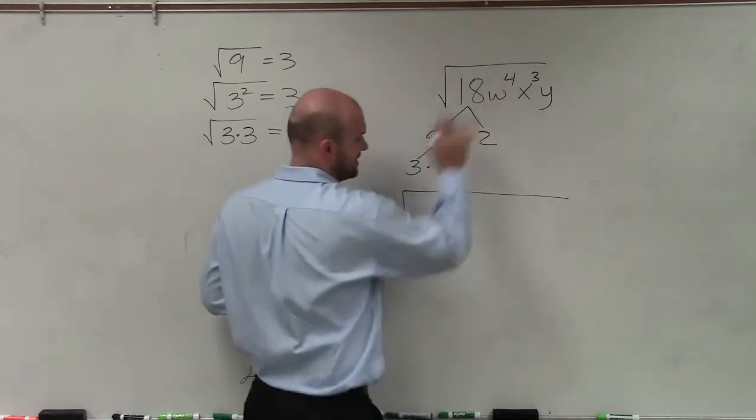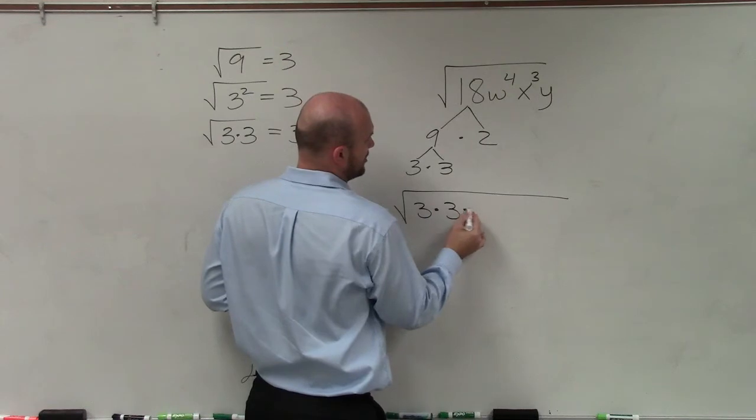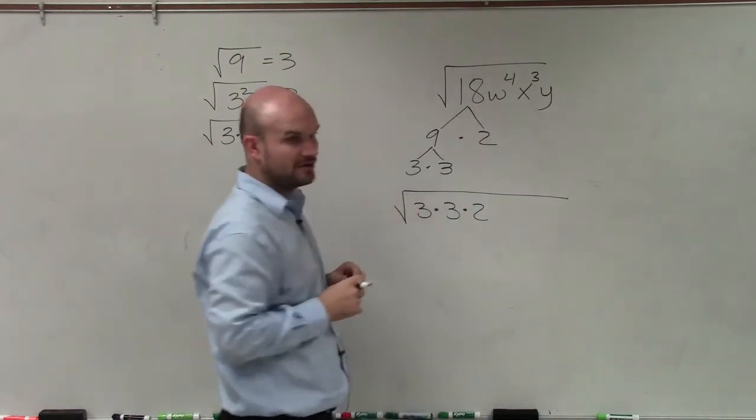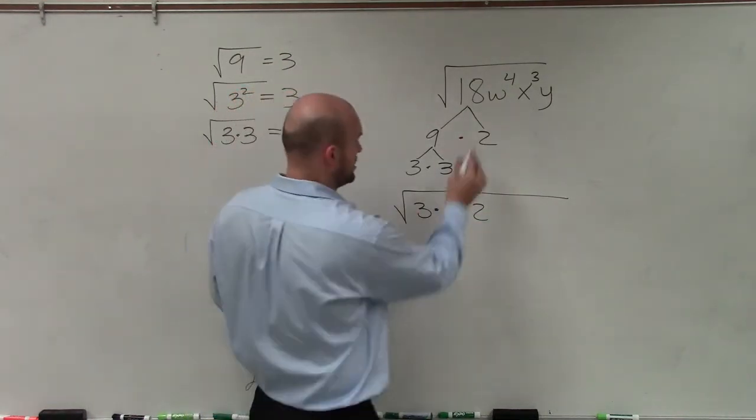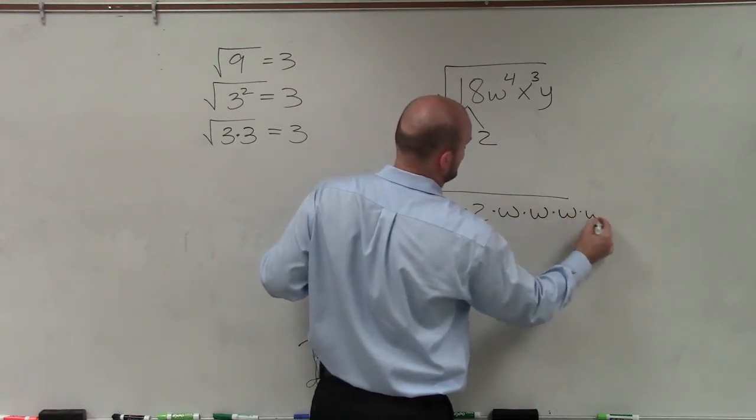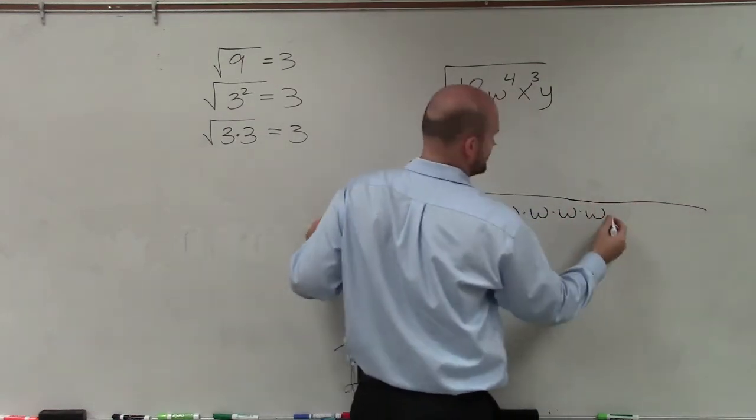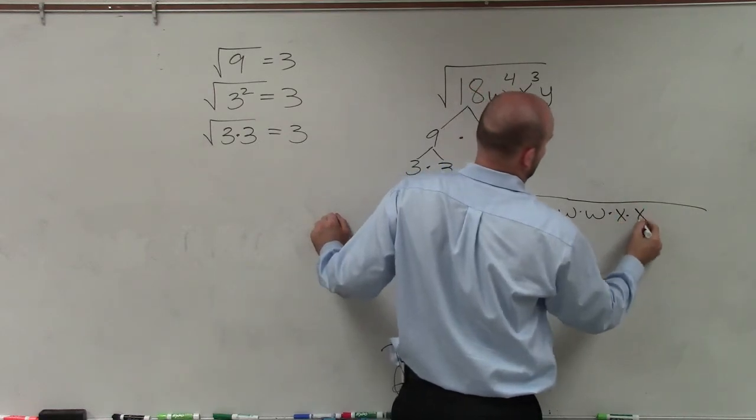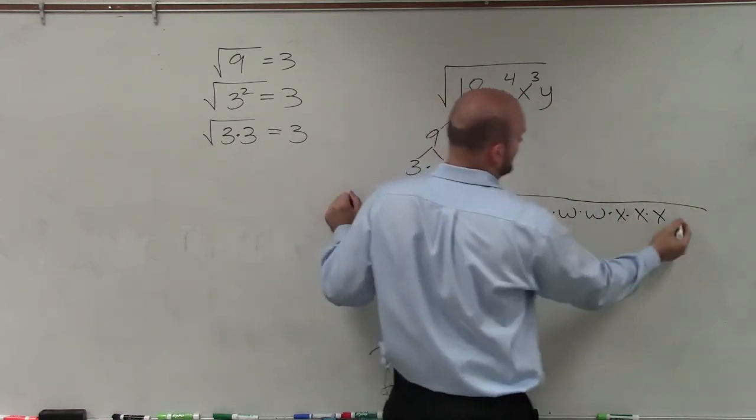Now, variables I think are pretty easy because you just multiply it how many times what the power is. So this w to the 4th can be written as w times w times w times w. x cubed is x times x times x and then y is right there.